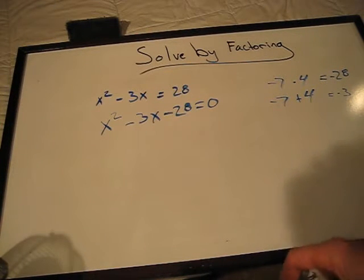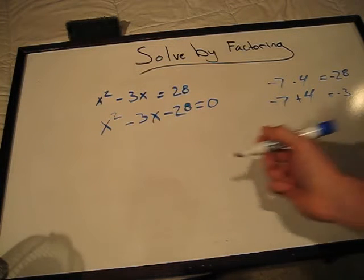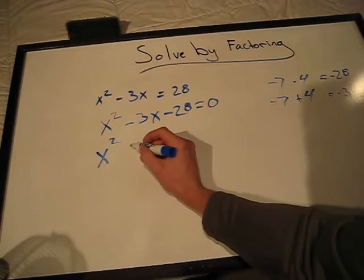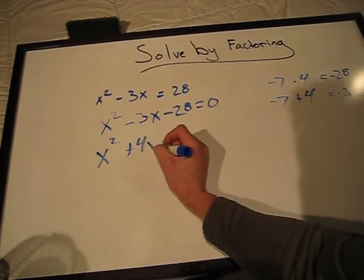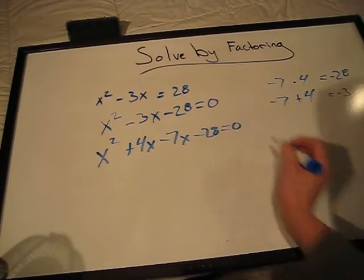Now we'll rewrite our trinomial into an equation with four terms: x² + 4x - 7x - 28 = 0.